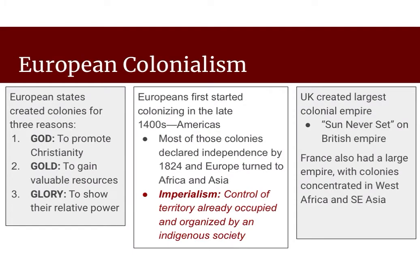So European colonialism specifically. The Europeans created colonies for those three G reasons that you talk about in class: God — to promote Christianity; gold — to gain valuable resources; and glory — to show their relative power and to increase that relative power. The Europeans first started colonizing in the late 1400s, and they started with the Americas.